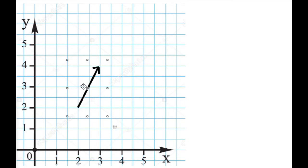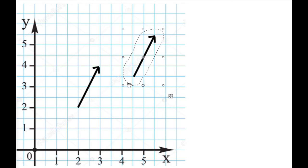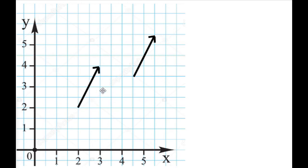That means that if I have another vector starting in another position, but it has the same direction and the same magnitude, then these two vectors are identical. If this is vector A and this is vector B, then I can write that A equals B.